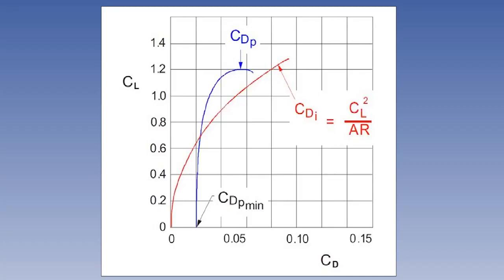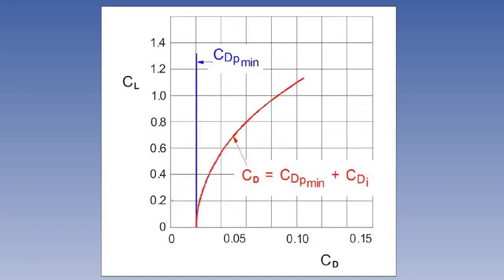However, the part of parasite drag above the minimum value occurring at zero lift is normally included with the induced drag coefficient, as shown in this second graph, where the parasite drag coefficient remains constant at its minimum against the increase in CL.